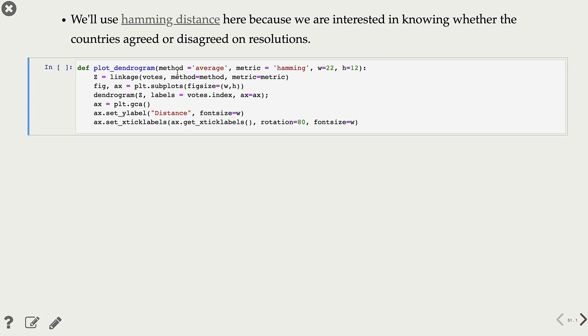We can use any method that we want, average, or single, or complete, or ward, and so on. Now the metric here I'm using is hamming distance, because we are only interested in knowing whether the countries agreed or disagreed on resolutions. So that's the distance matrix that I decided to use, and I'm creating linkage matrix and plotting dendrogram.